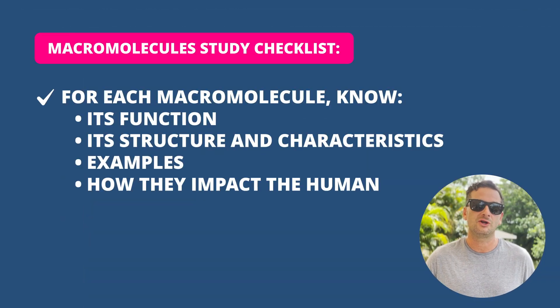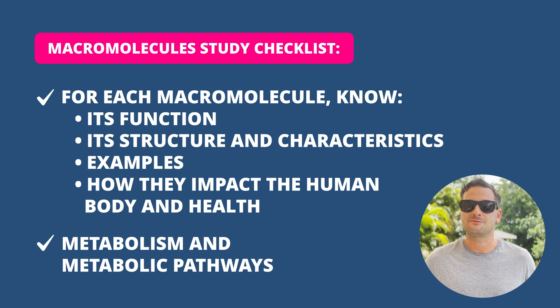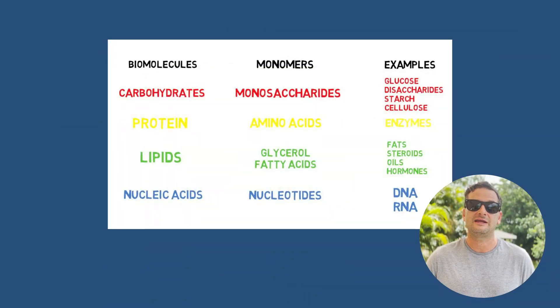For macromolecules, you'll need to know each type — also known as biomolecules — including their structure, role or function, functional unit, and examples. Study the different ways covalent bonds can be broken down and how each macromolecule impacts the human body. For example, monitoring lipid levels such as cholesterol and triglycerides is really important for managing cardiovascular health.